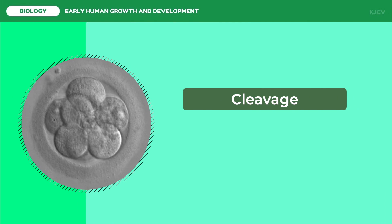Growth starts in a process called cleavage. At this point, the fertilized egg is called a zygote, and it undergoes a series of mitotic divisions to develop into a blastocyst. There are cases in which one fertilized egg is completely split into two, leading to identical or monozygotic twins. Very rare cases of identical multiple births also occur.